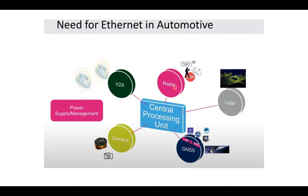In enterprise Ethernet, we typically use an RJ45 connector with eight pins and four twisted pairs of wires. These have problems in automotive contexts because mechanical movement, pressure, and vibrations inside a moving vehicle can cause issues. Automotive Ethernet connectors must be stable and able to withstand pressure, mechanical movement, vibrations, EMI/EMC concerns, and humidity. This is why a single twisted-pair cable with electromagnetic compatibility is used.